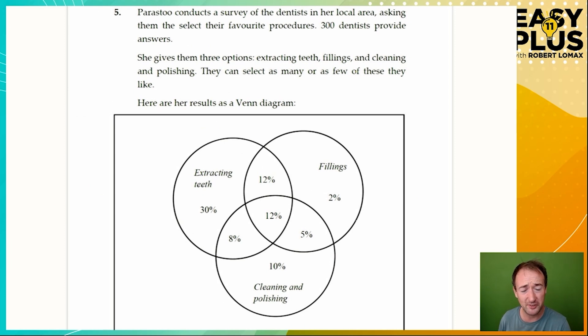Let's go on to the next question now. This is quite a similar question, so it gives us a chance to experiment with some of the skills we've just been working on. Parastu conducts a survey of the dentists in her local area, asking them to select their favorite procedures. 300 dentists provide answers. She gives them three options: extracting teeth, fillings, and cleaning and polishing. They can select as many or as few of these as they like.